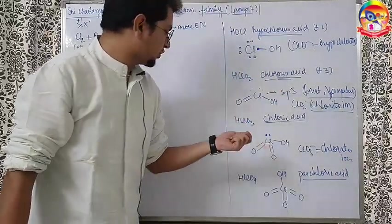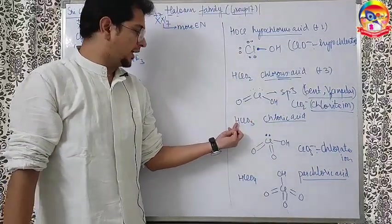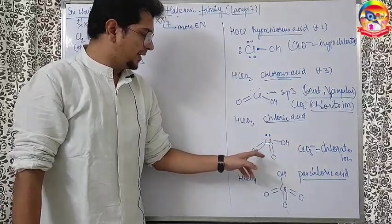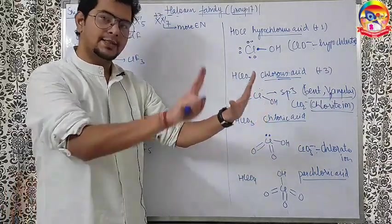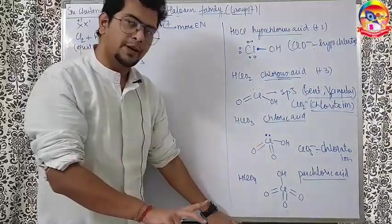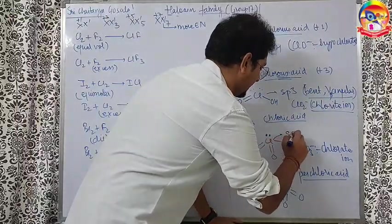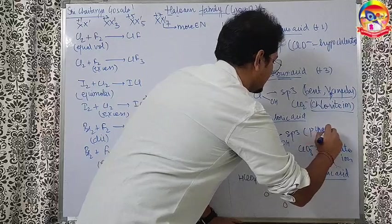Going ahead, about the structure here, we have 3 oxygen and 1 hydrogen, so 1 OH will come, remaining 2 will be double bond O. So 1, 2, 3, 4, 5 bonds are made, 7 electrons were there, so 1 lone pair left. This will also be SP3 and the structure is going to be pyramidal, just like ammonia.